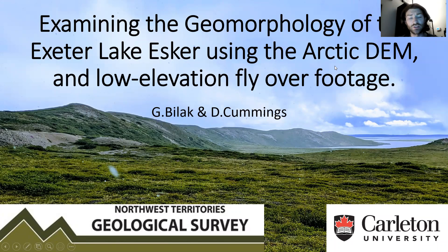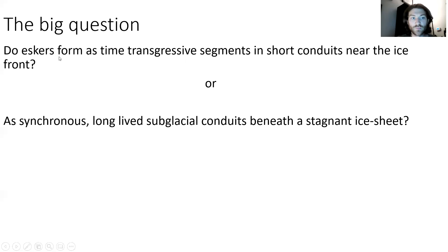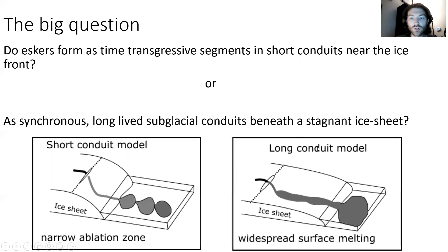This is our study area. This is the Exeter Lake Esker here in black. It extends from the Bont Lake over here to Exmouth Lake, starting in the Thelon Basin, across the Thelon tectonic zone, across the Slave Craton and terminating in the Watme origin. A big question to keep in mind is: do eskers form as time-transgressive segments in short conduits near the ice margin, or as long conduits beneath the more stagnant ice sheet?